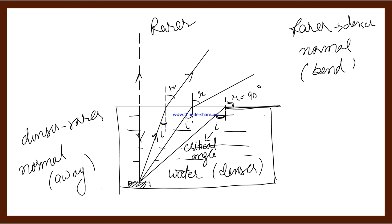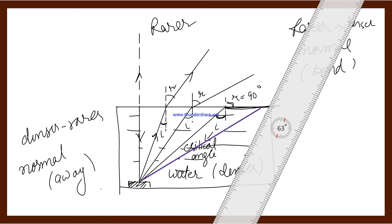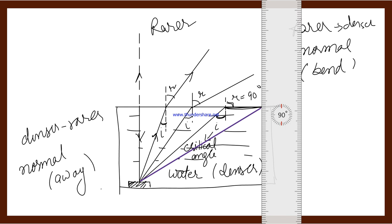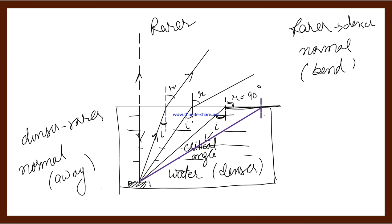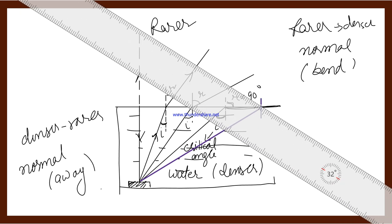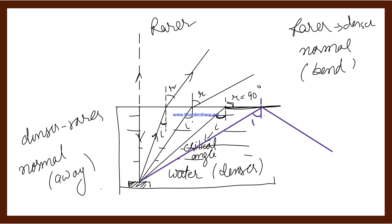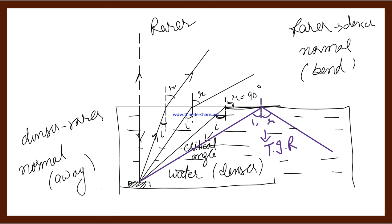When the angle of incidence is increased beyond the critical angle, light reflects back into the same medium — this is Total Internal Reflection. Draw the diagram carefully; any mistake in the diagram means the entire total internal reflection diagram is wrong. In the diagram, always label angle of incidence as i and angle of refraction as r — both should be equal in the reflection case.